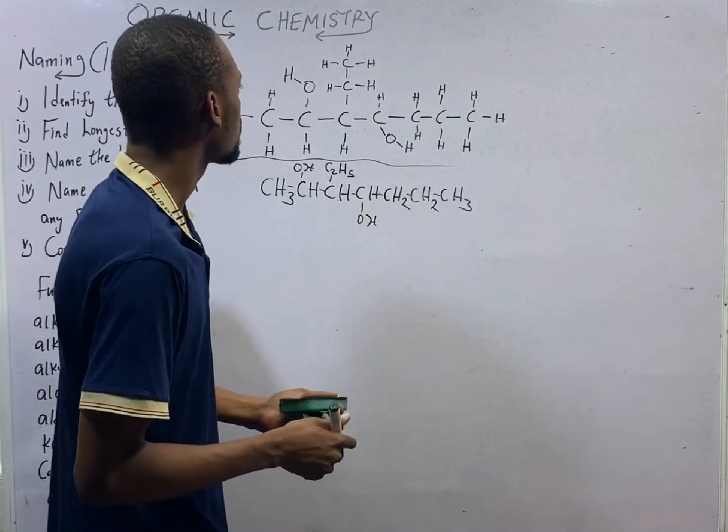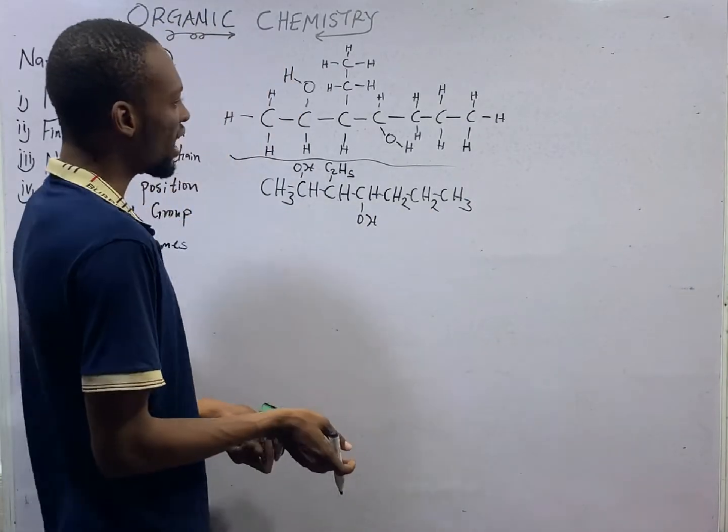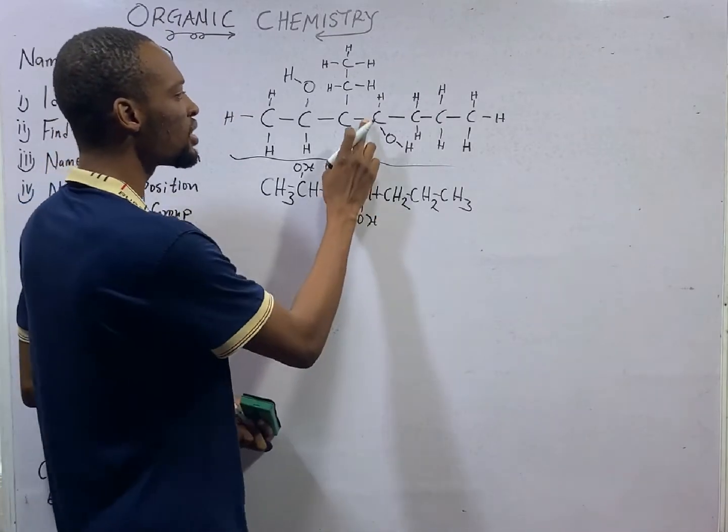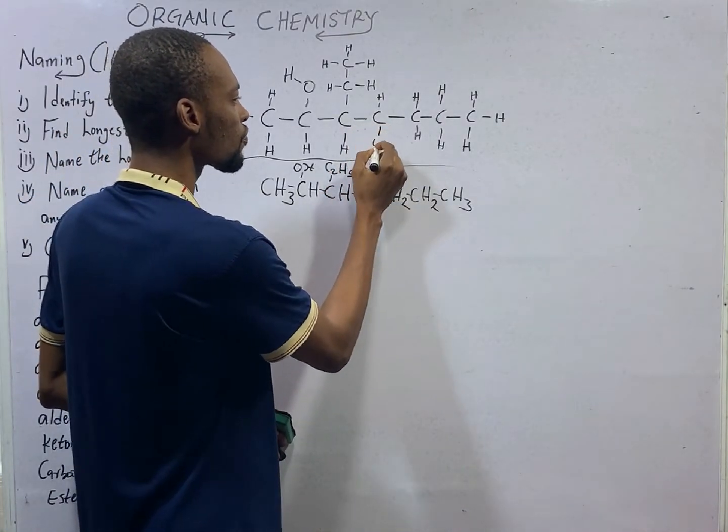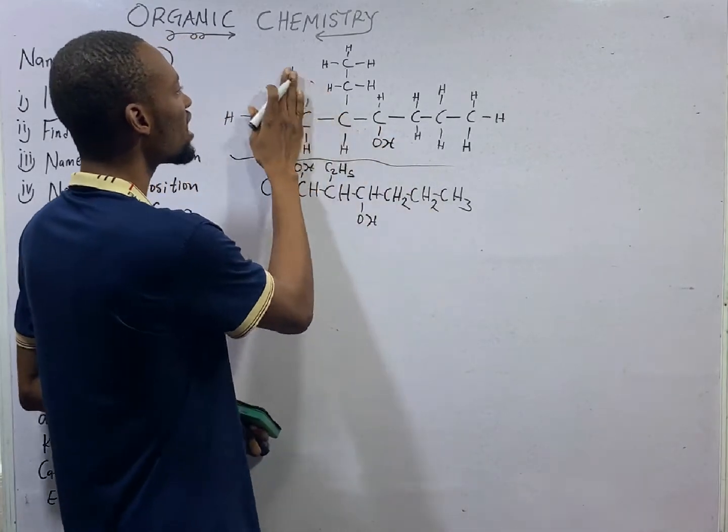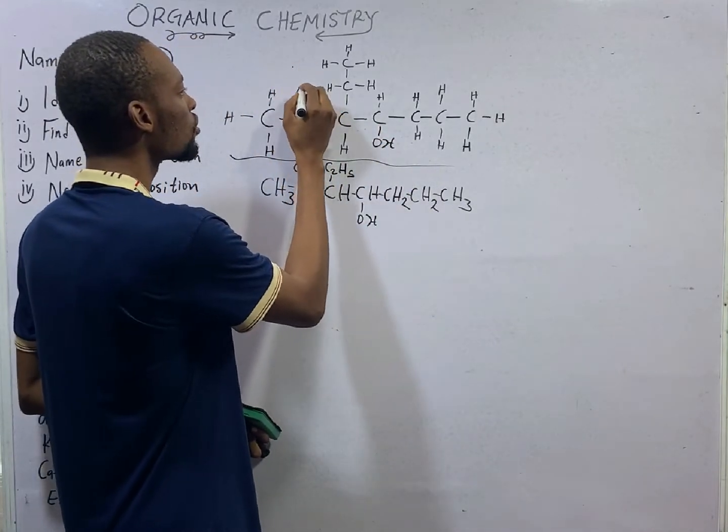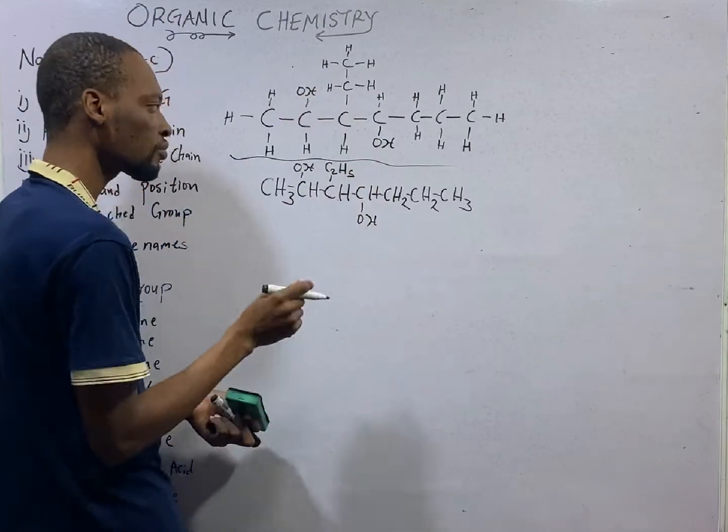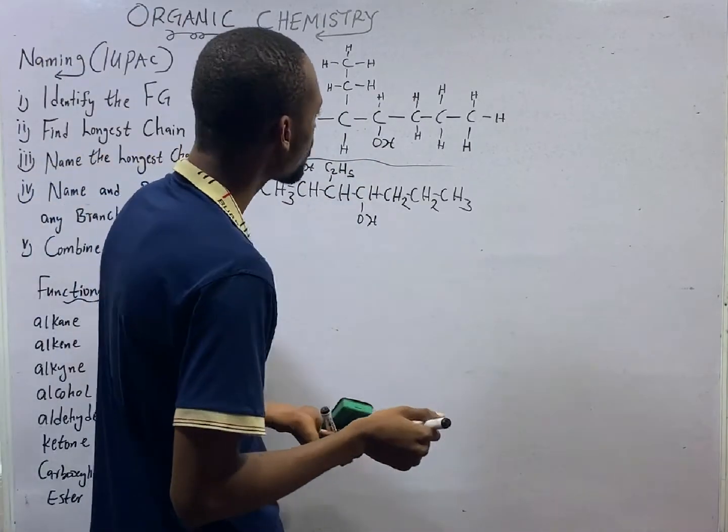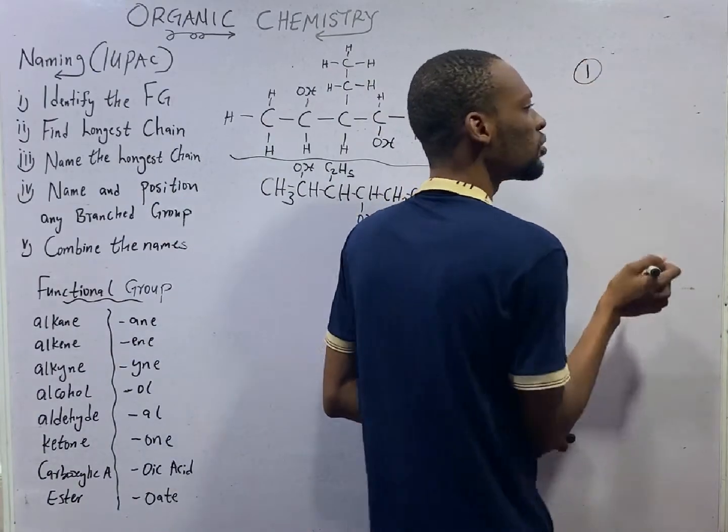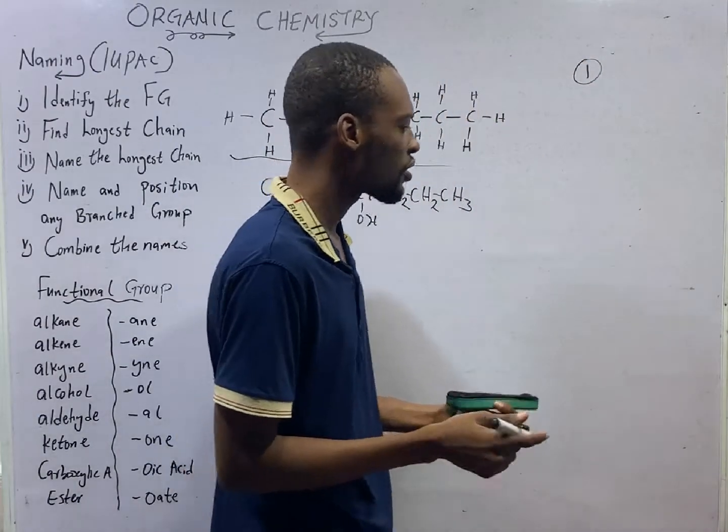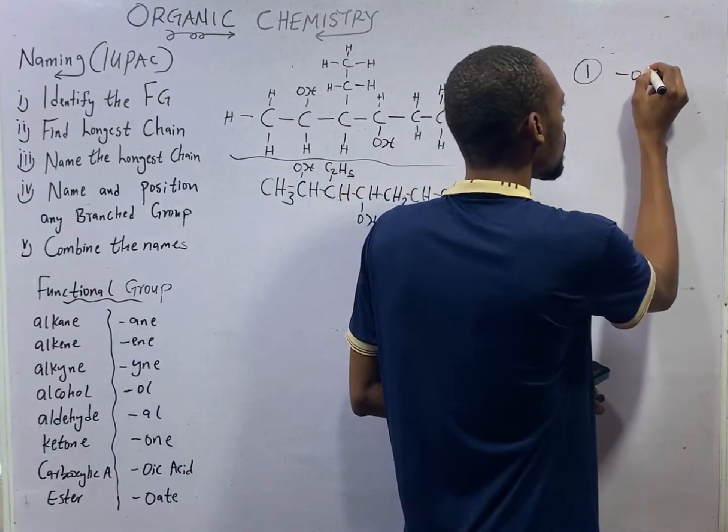From this compound, I told you that anytime you see carbon to O and to H, this is the same thing as OH and here is the same thing as OH. The functional group here is obviously the alcohol group or the alkanol and for alkanols, the suffix is OL.